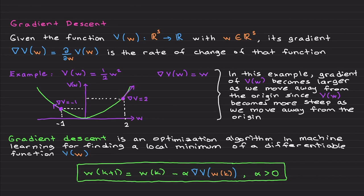The gradient at two is larger than the gradient at one. It basically shows the direction that the function grows. At minus one the gradient is minus one, and at minus two it will be much stronger. The gradient of V becomes larger as we move away from the origin, because V becomes more steep as we move away from the origin.